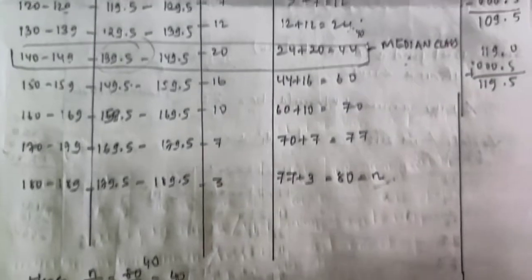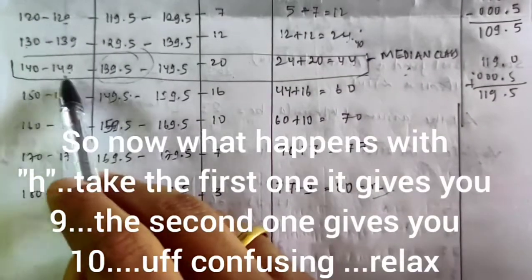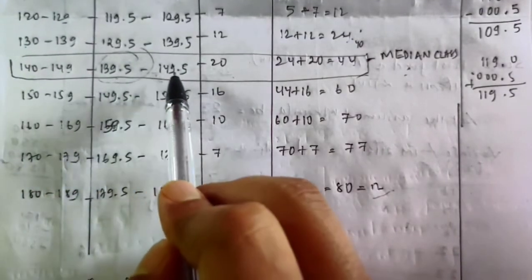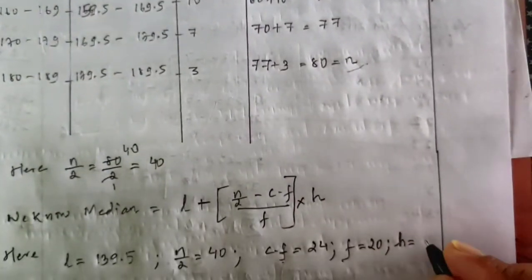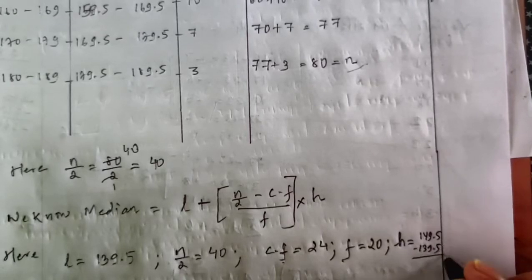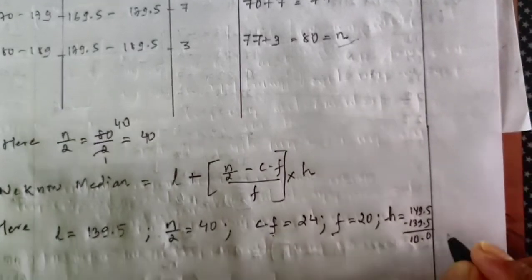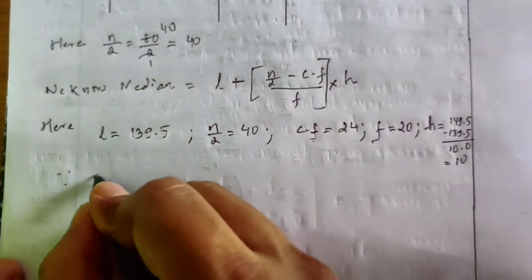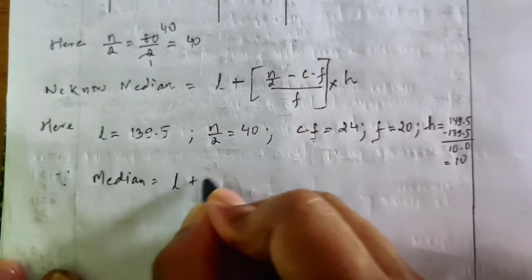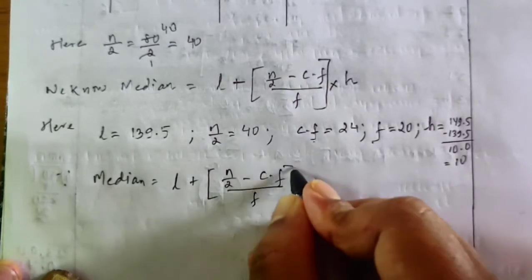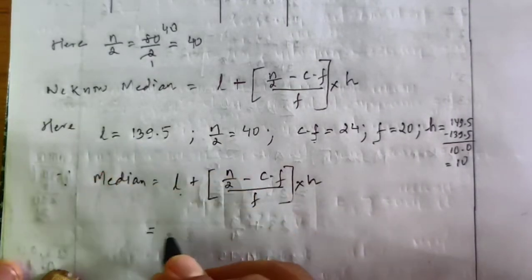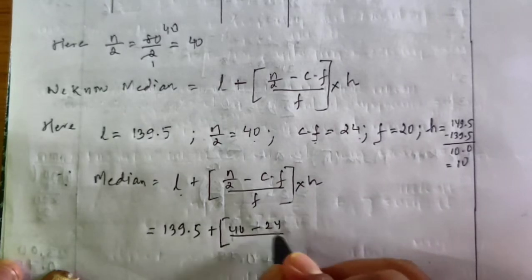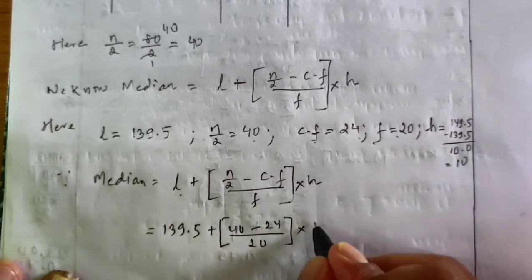h is the class size. Which one to take? If I take this, the class size would be 9; if I take this, it would be 10. Since this is inclusive, I will not take anything from the inclusive side — I take from the exclusive. So 149.5 minus 139.5 equals 10. So h = 10. Now let's put down the values.